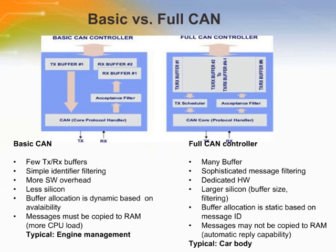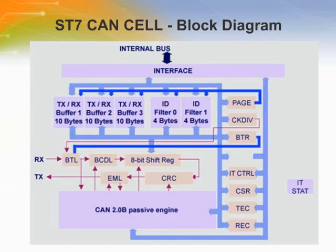The ST7 microcontrollers use exclusively basic CAN. Full CAN is dedicated to more sophisticated controllers like the ST9 or the ST10. The CAN controller block diagram shows transmit and receive buffers of 10 bytes each, supporting the CAN 2.0B specification up to 1 megabit per second. The ST7 controllers that embed CAN are the ST72T511, ST72T589, ST72T55, and ST72F521.